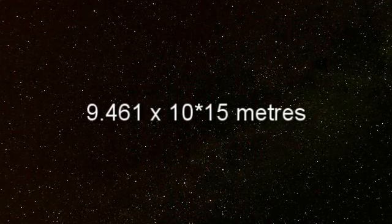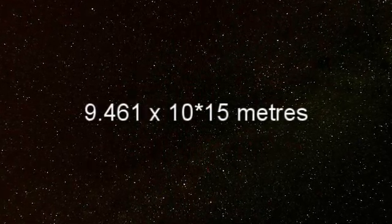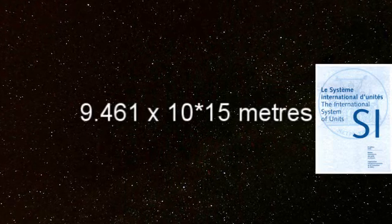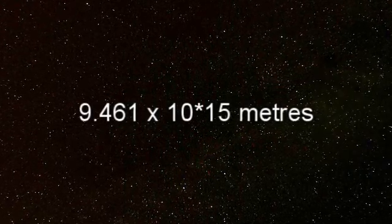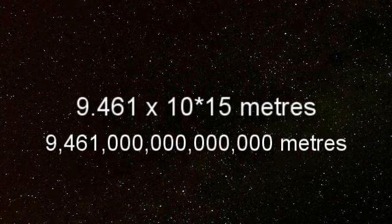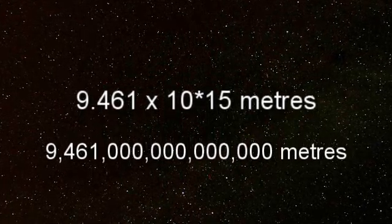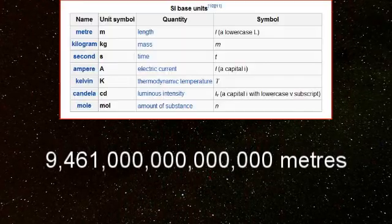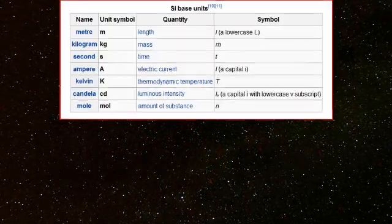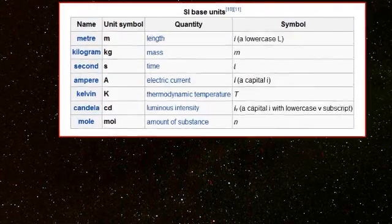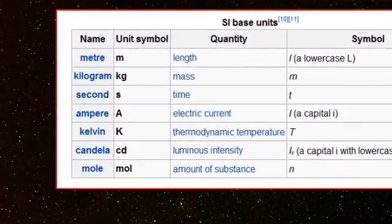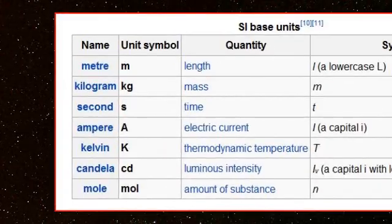That last figure is expressed in SI (Système International) units, which all scientists should be familiar with. To write it out longhand, you need to move the decimal point fifteen places to the right. In SI units, distance is always measured in meters, mass in kilograms, and time in seconds. All physics equations can be reduced to seven standard units of measurement.